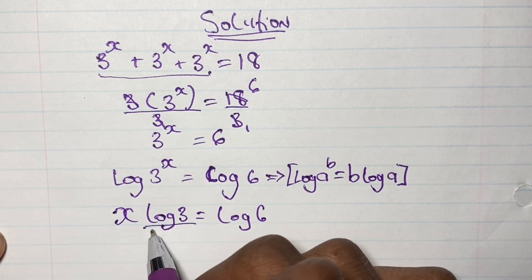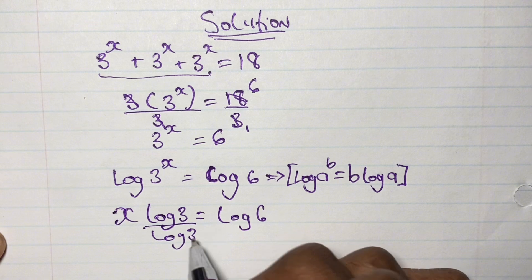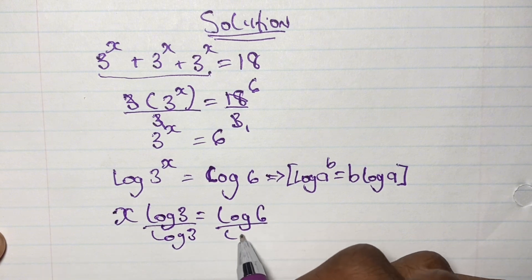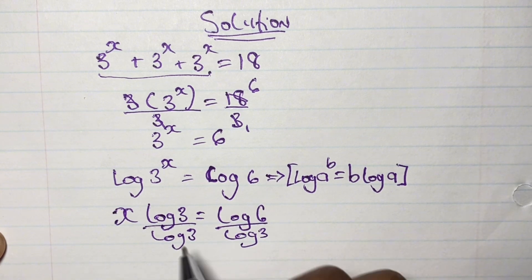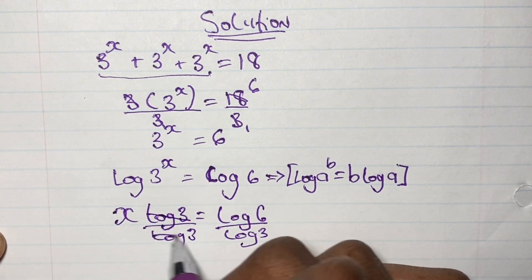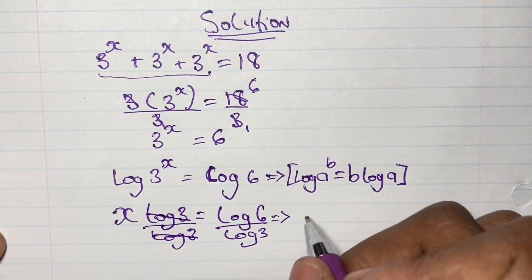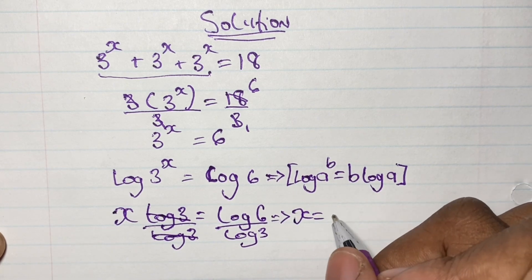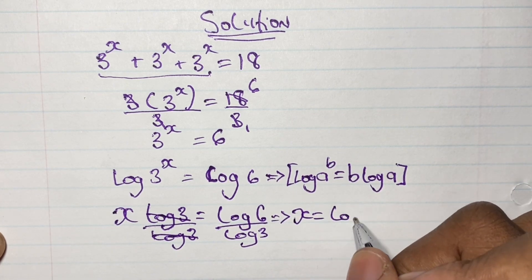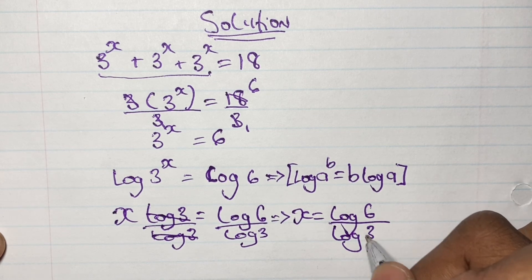In solving for x, we can divide both sides by log 3. Log 3 on the left cancels out, and on the right we have log 6 over log 3. So that means x is equal to log 6 over log 3. Now this is actually our solution for x, but we can go ahead and simplify this a little bit further.